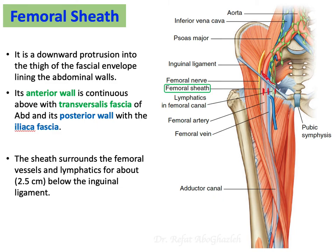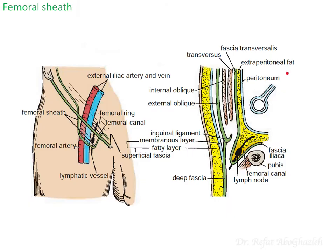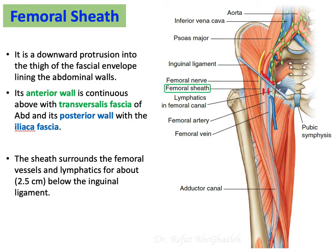The anterior wall of the femoral sheath is a continuation of the transversalis fascia of the abdomen — the deep layer of the abdominal wall just before the extraperitoneal fat and peritoneum. The posterior wall of the femoral sheath continues with the iliac fascia, also called fascia iliaca.